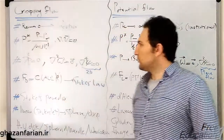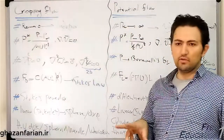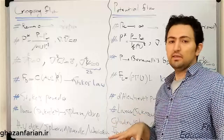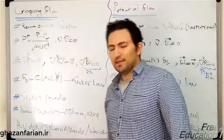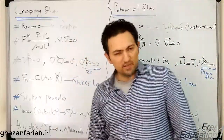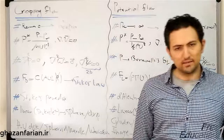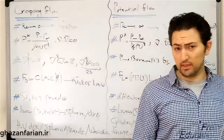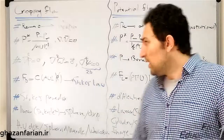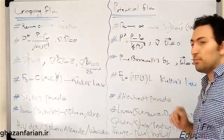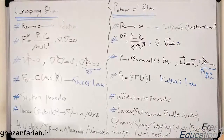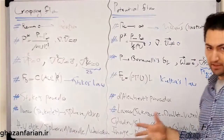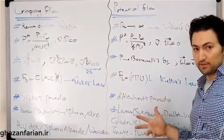Because the Reynolds number goes to zero in creeping flow, the flow velocity is small, the velocity field diverges less, and the flow is incompressible. In contrast, potential flow can be either compressible or incompressible, with different governing equations for each case.